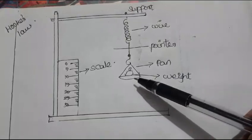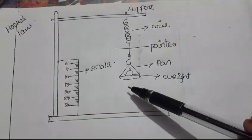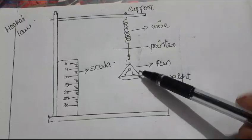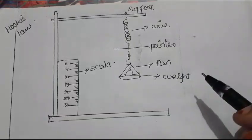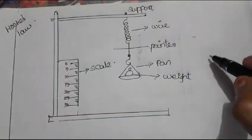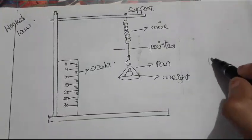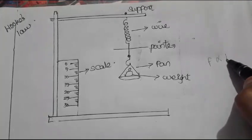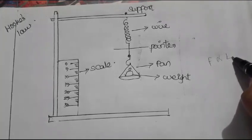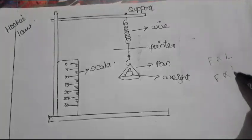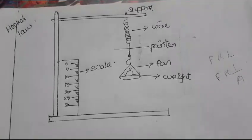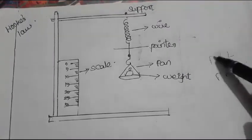The extension del L is directly proportional to the original length L and inversely proportional to the cross-sectional area. It is directly proportional to the stretching force F. So the extension depends on the force F, the original length L, and the area of cross-section.